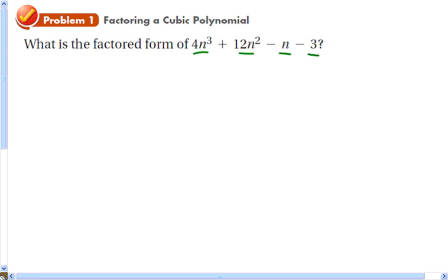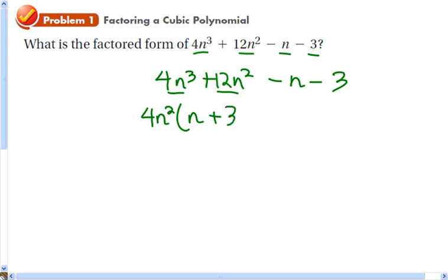The first thing you're going to want to try is factoring the two highest powers together. So we're going to look at 4n³ + 12n² separately from minus n - 3. If I factor the greatest common factor out of those two terms, that would be 4n². When I do that, I'm left with n + 3.